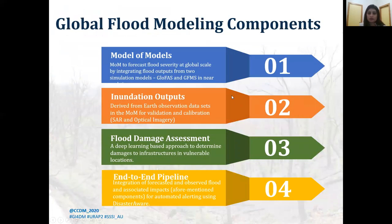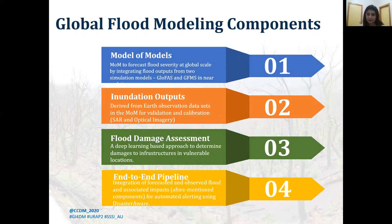Towards that end, this work has four components. First is the Model of Models, which integrates flood outputs from two global flood forecast models — the Global Flood Monitoring System (GFMS) and the Global Flood Awareness System (GLOFAS) — in near real time to forecast flood severity at global scale. Second is obtaining inundation output using SAR imagery at a granular level for validation and calibration. Third is flood damage assessment using a deep learning approach to extract building footprints within high severity areas. Fourth is an end-to-end pipeline to automate and integrate all components for automated alerting using DisasterAWARE.